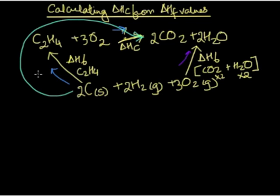This one over here which I'm going to call route 1. In route 1, we go from the elements in the standard states to ethene which is then combusted to give you CO2 and water.